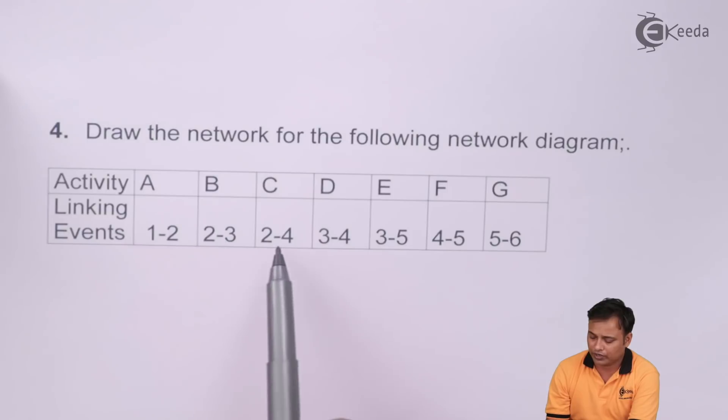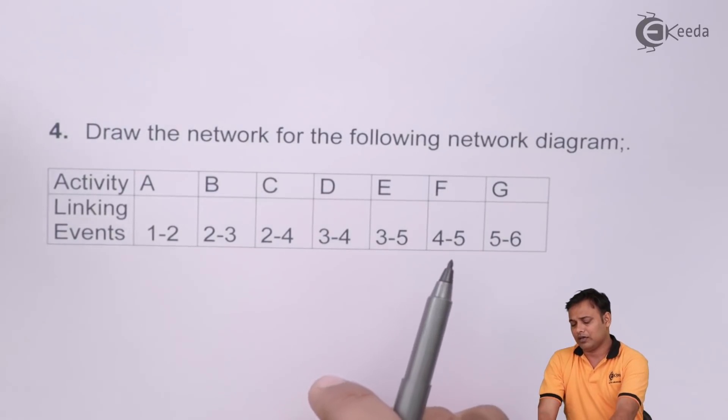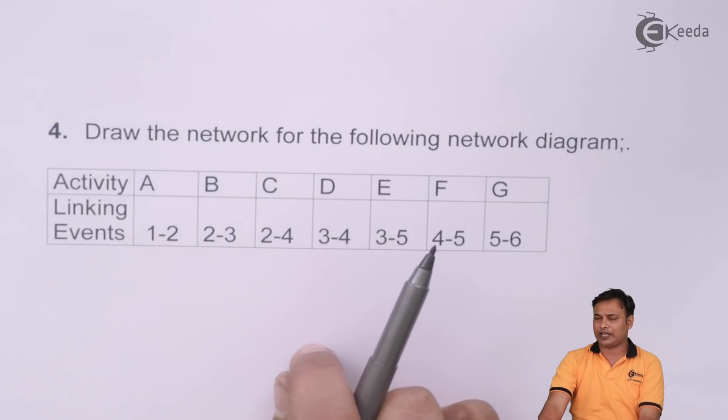1 to 2, 2 to 3, 2 to 4, 3 to 4, 3 to 5, 4 to 5 and 5 to 6. Now this can be drawn directly without any preceding or the succeeding activities.